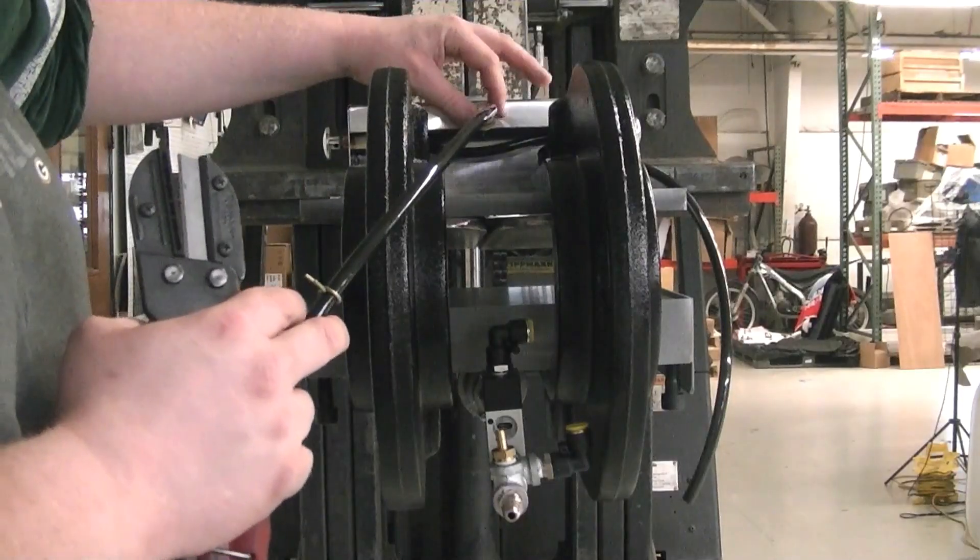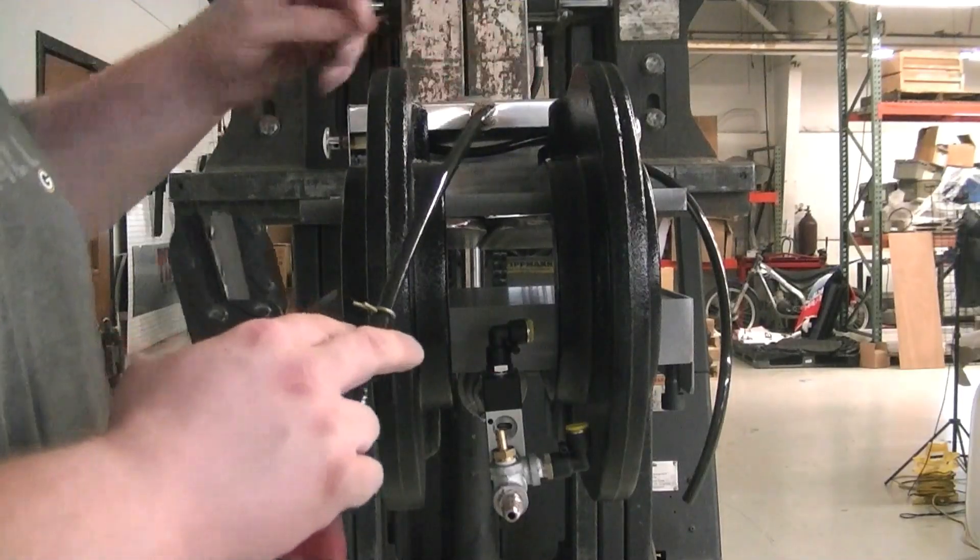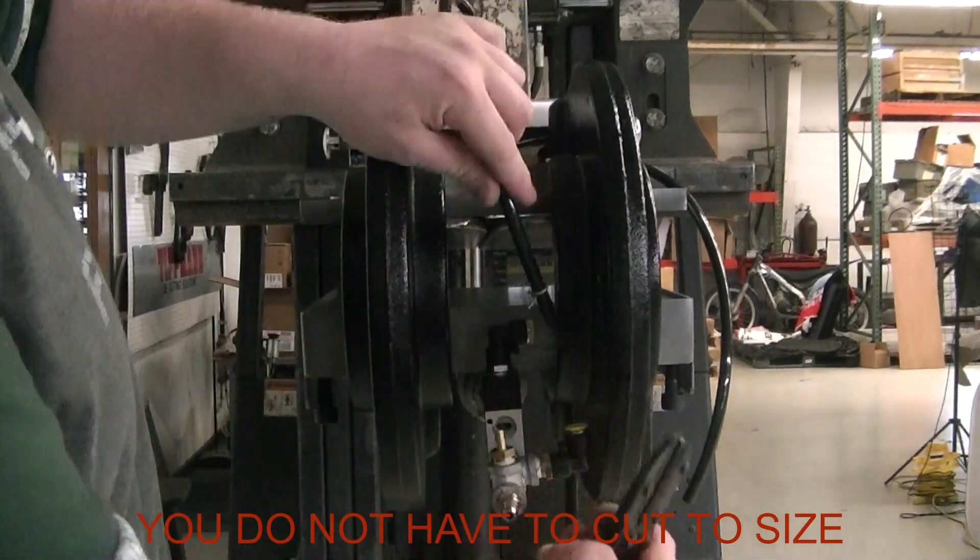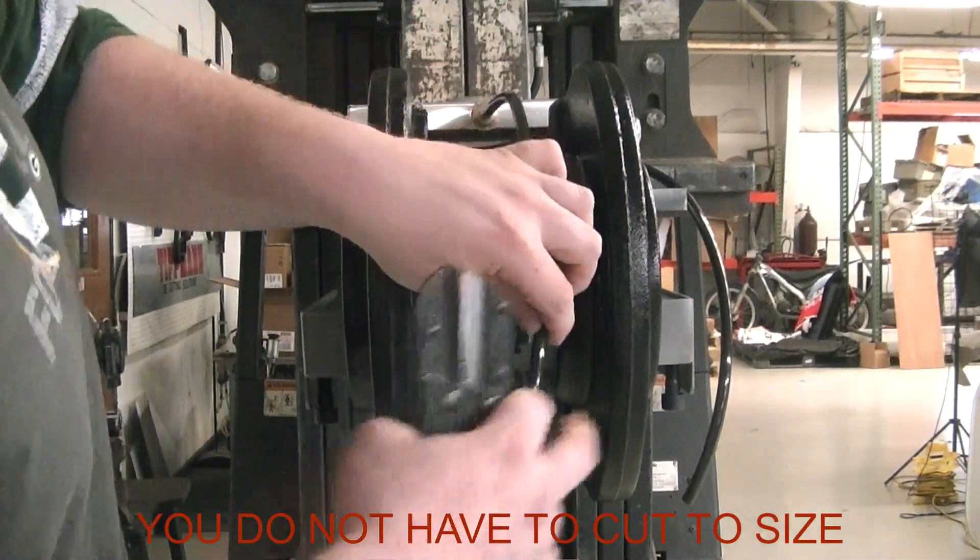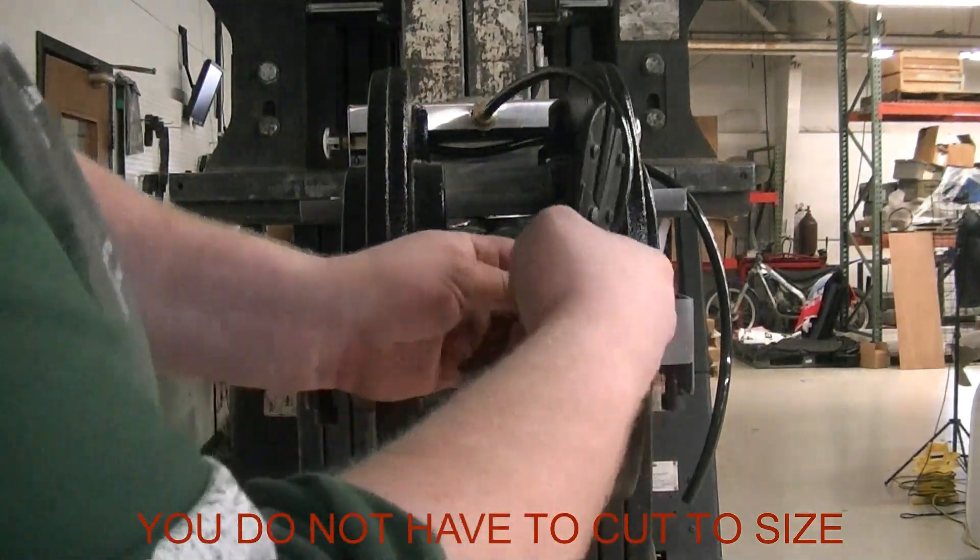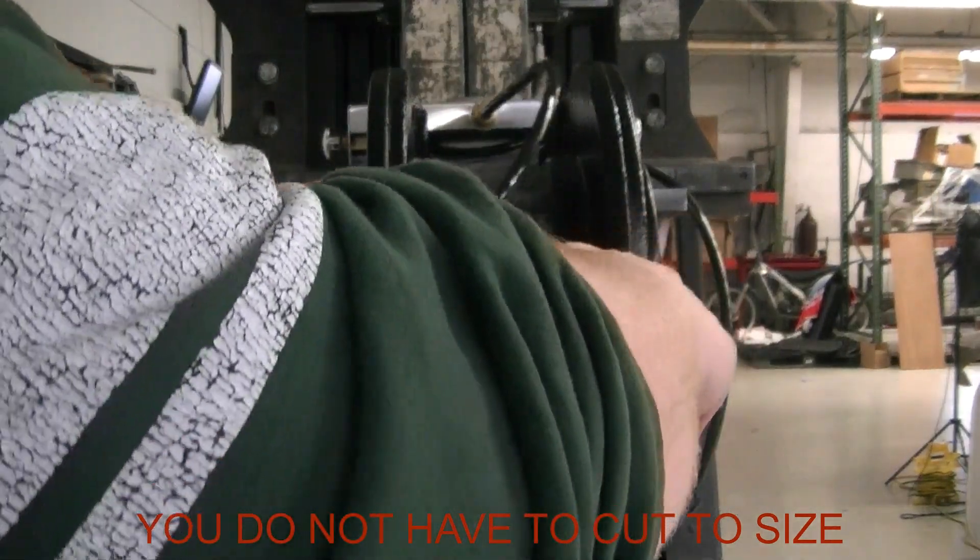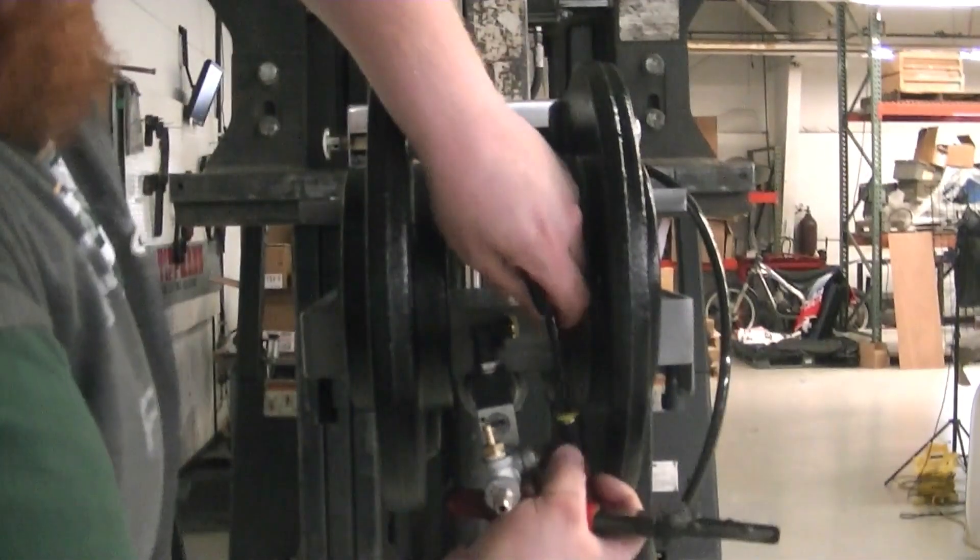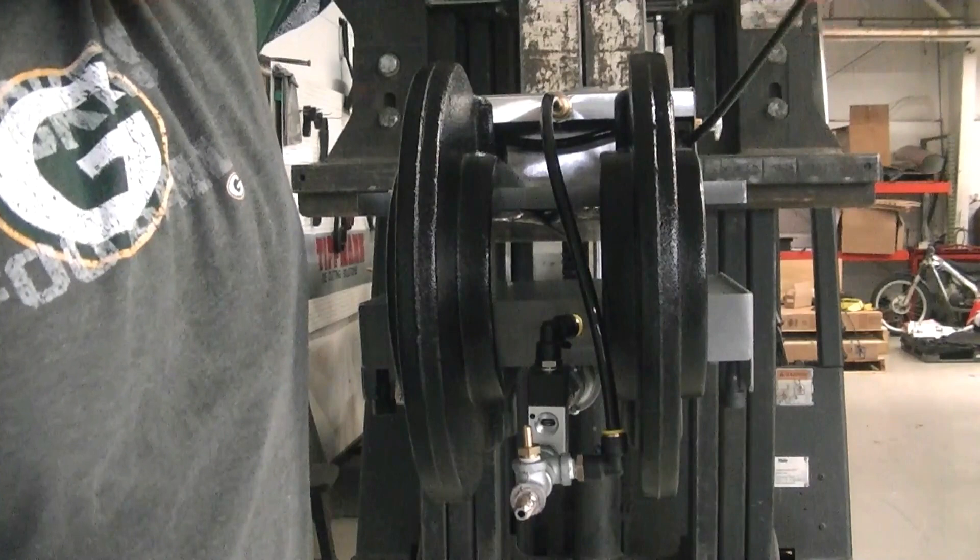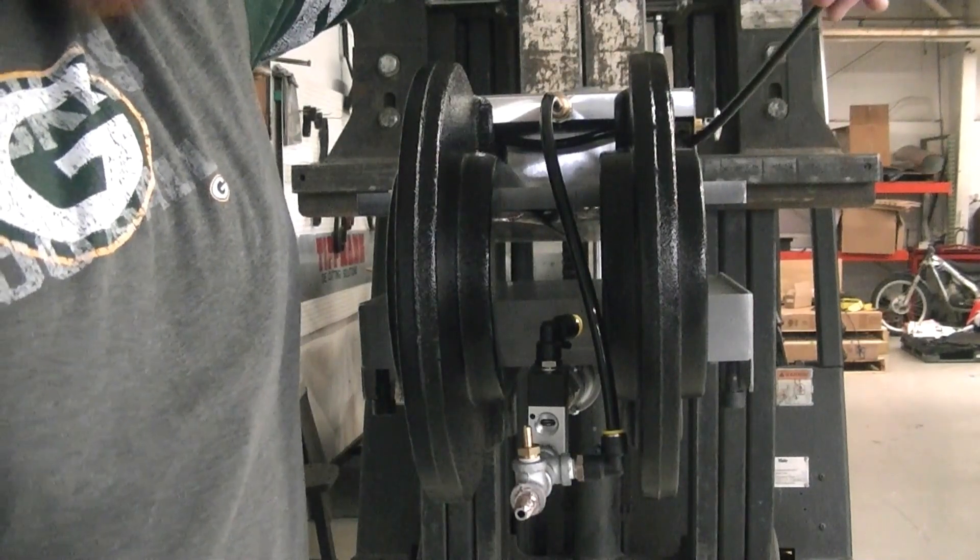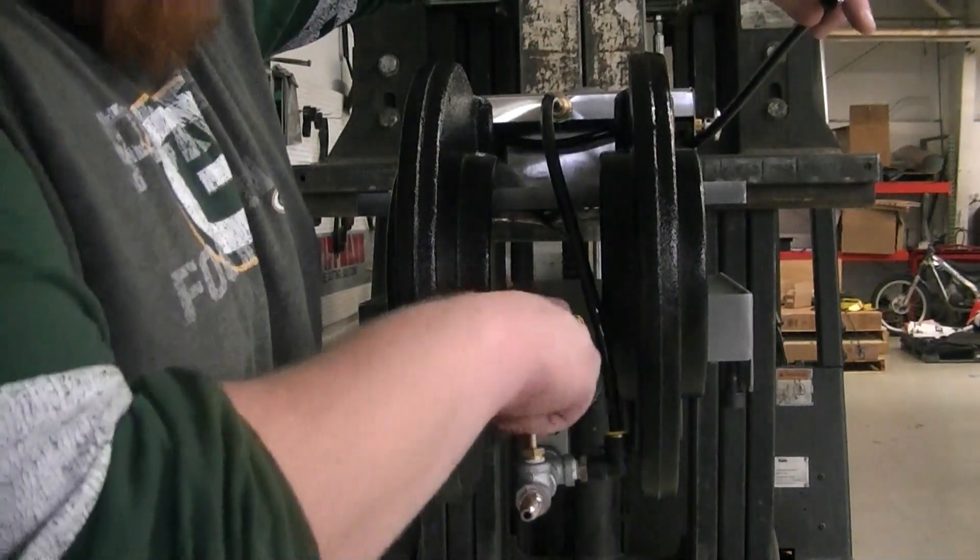Next, take the hose coming from the back of the control box, cut it to size, and connect it to the push connect that comes from the T-pipe. Then take the hose coming from inside the control box and connect it to the push connect